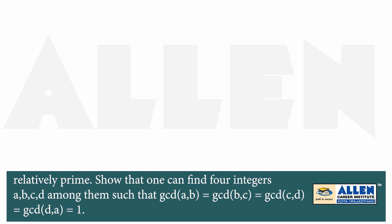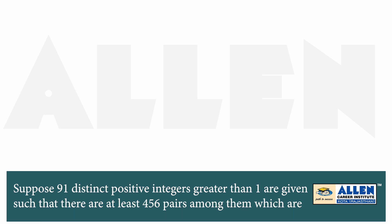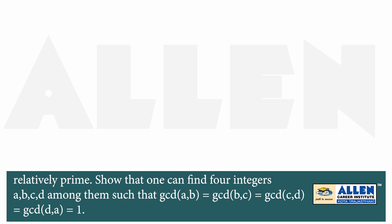We need to have a graph with 91 vertices and 456 co-prime pairs will correspond to 456 edges. We need to consider a graph of 91 vertices with at least 456 edges.